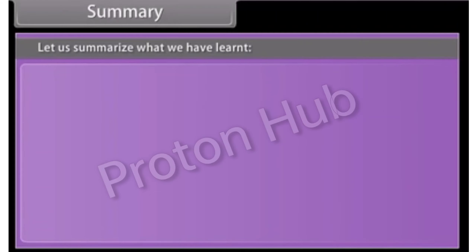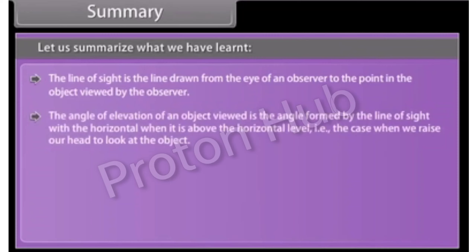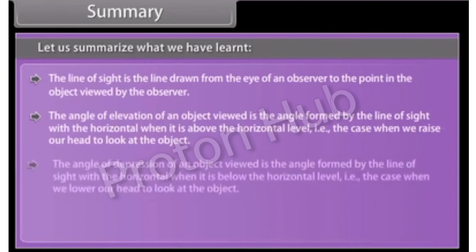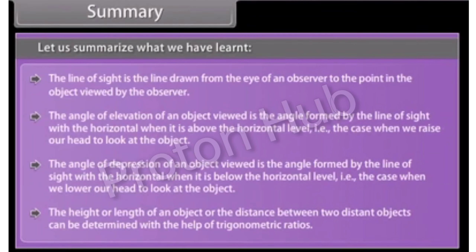Let us summarize what we have learned. The line of sight is the line drawn from the eye of an observer to the point in the object viewed by the observer. The angle of elevation of an object viewed is the angle formed by the line of sight with the horizontal when it is above the horizontal level — that is, the case when we raise our head to look at the object. The angle of depression of an object viewed is the angle formed by the line of sight with the horizontal when it is below the horizontal level — that is, the case when we lower our head to look at the object. The height or length of an object or the distance between two distant objects can be determined with the help of trigonometric ratios.